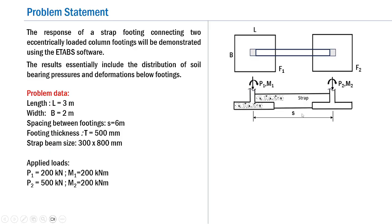The parameters for the problem are as follows: the length of the footing is 3 meters, width B is 2 meters, the spacing between the two footings is 6 meters, and the footing thickness is 500 mm. The strap is kept sufficiently rigid with a beam size of 300 by 800 mm.